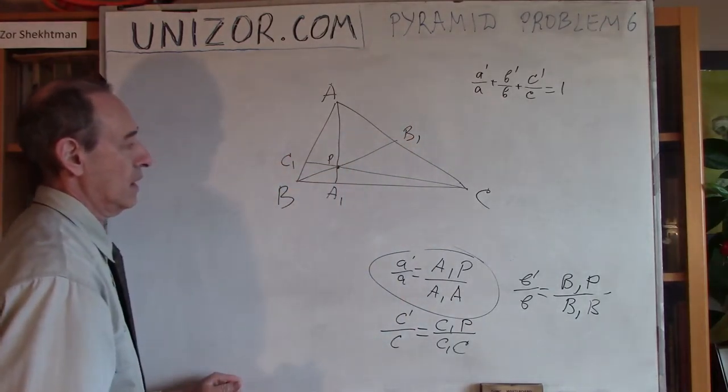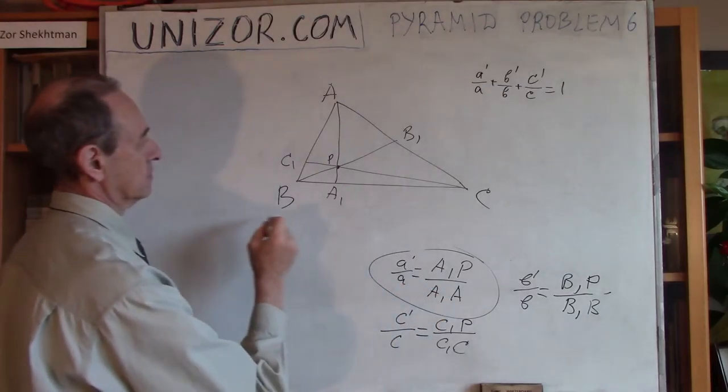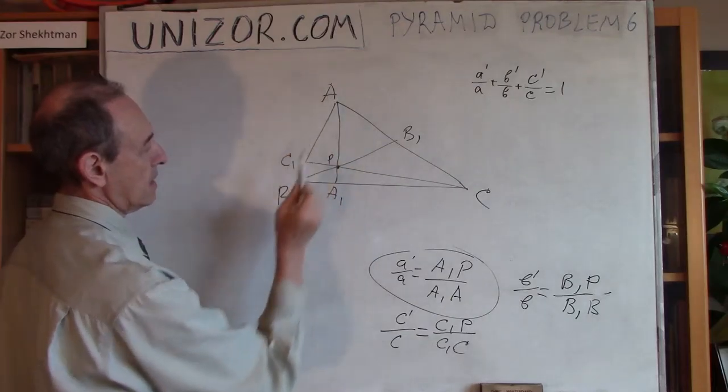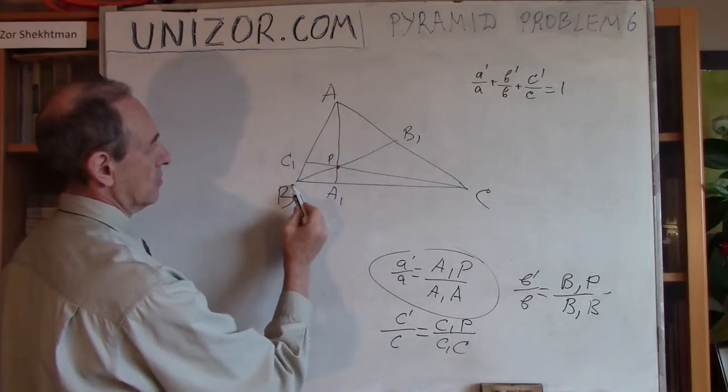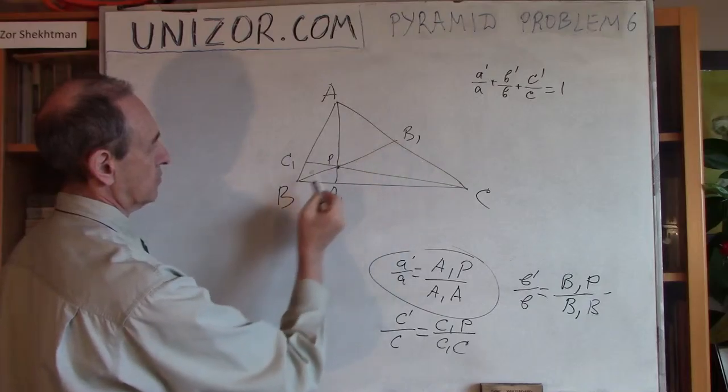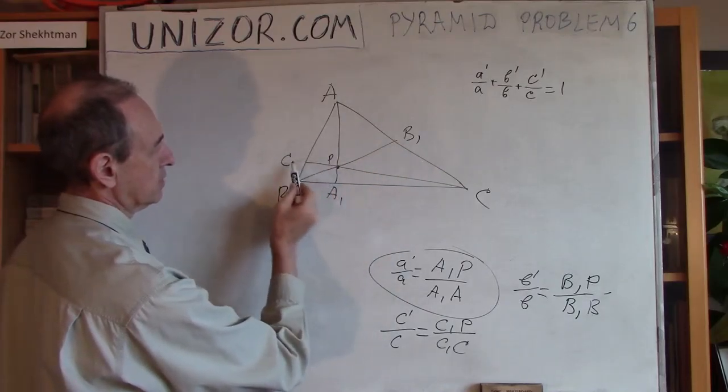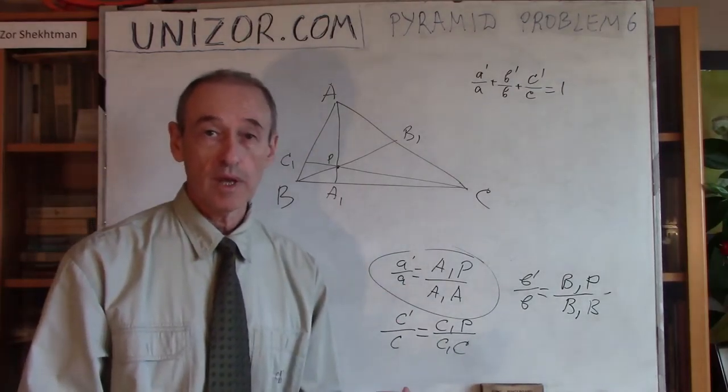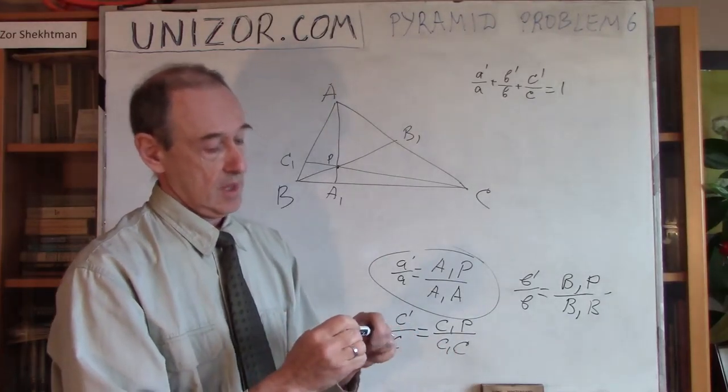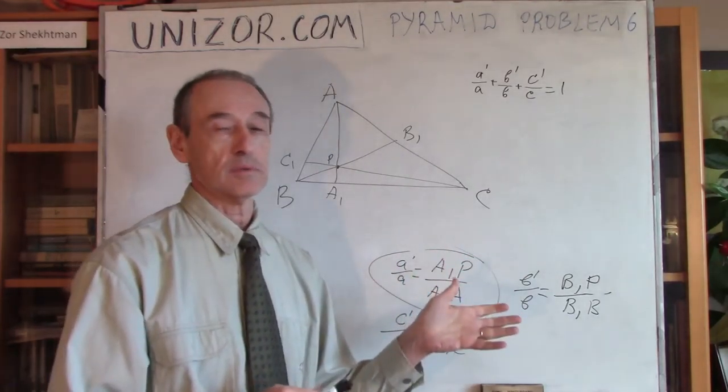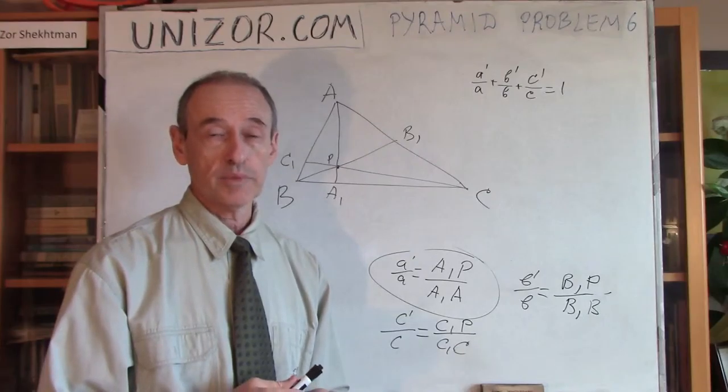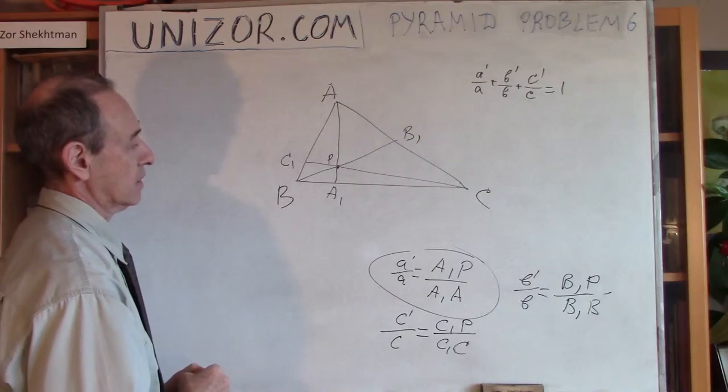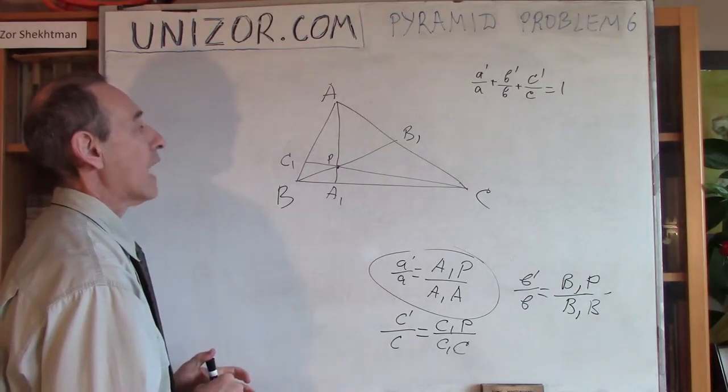And I have to prove that A1P divided by A1A plus B1P divided by B1B plus C1P divided by C1C is equal to 1. It's a plane geometry problem, which has its own interest. I would love to put this problem in one of my plane geometry lectures. It came out for solid geometry case.